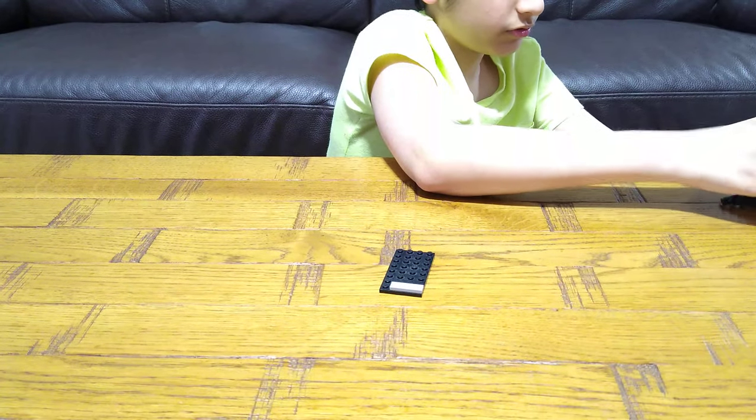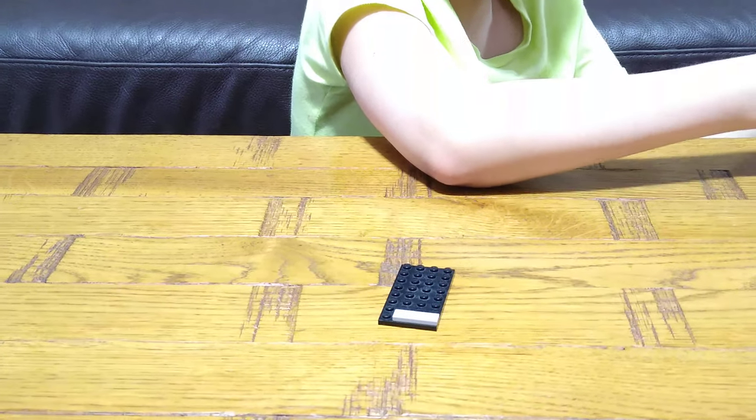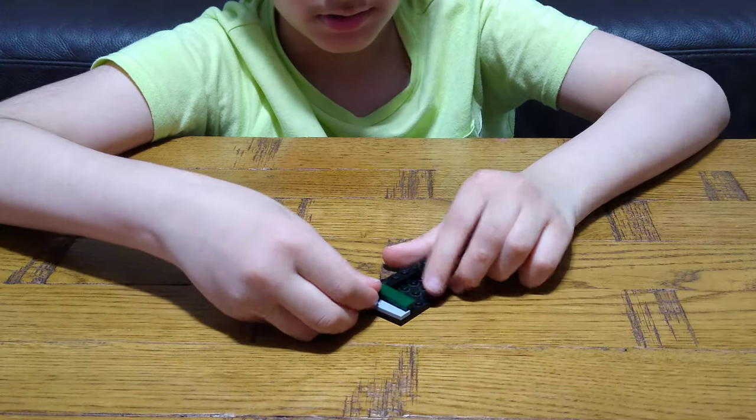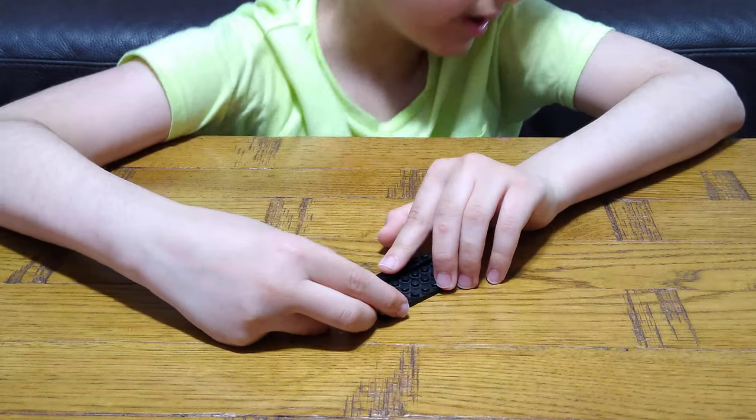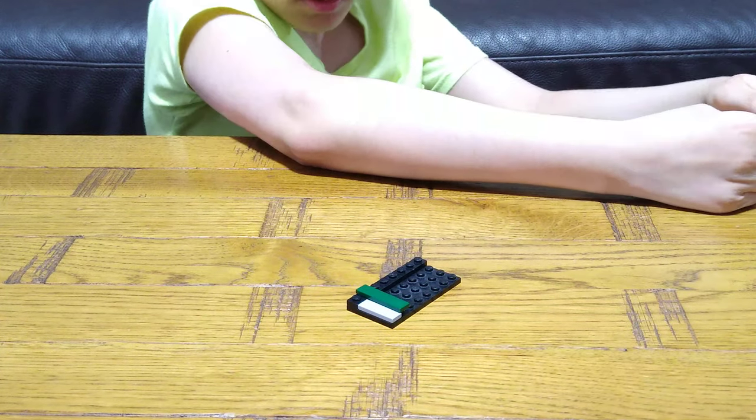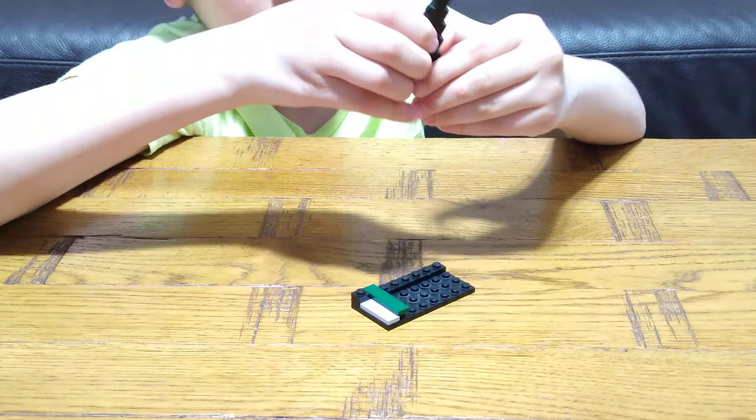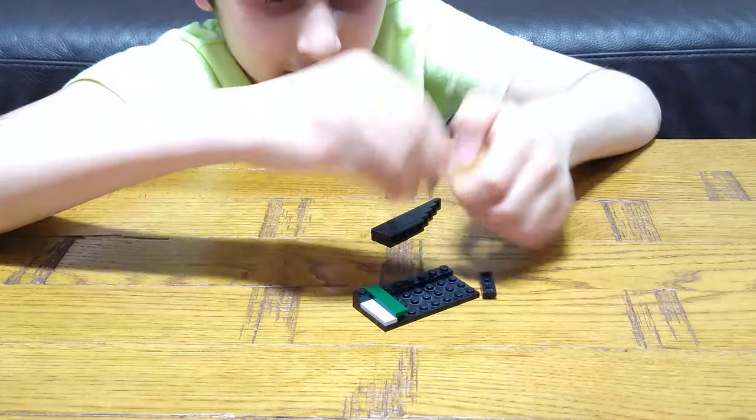Then you get a 1x8 tile and a 1x tile like that. Then you place a green tile there. Next, you put this here and then this here like this.